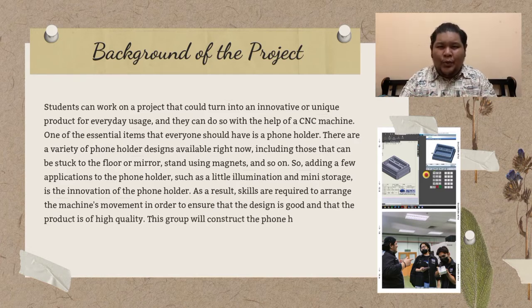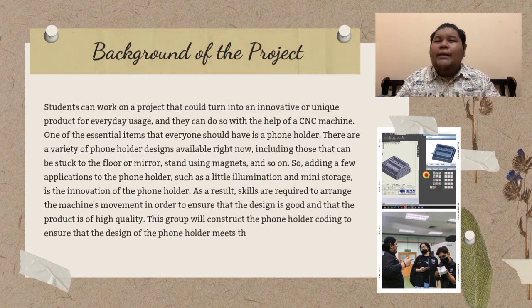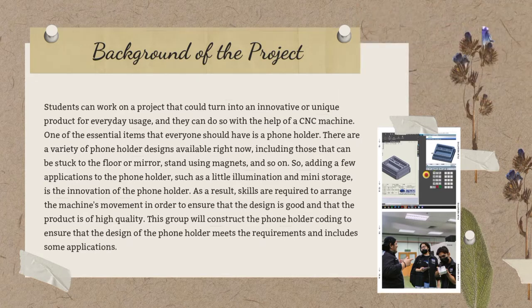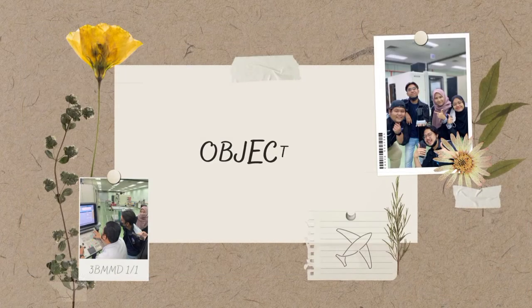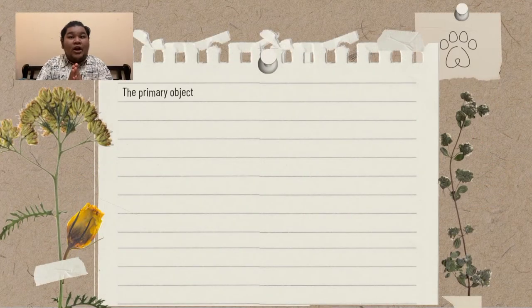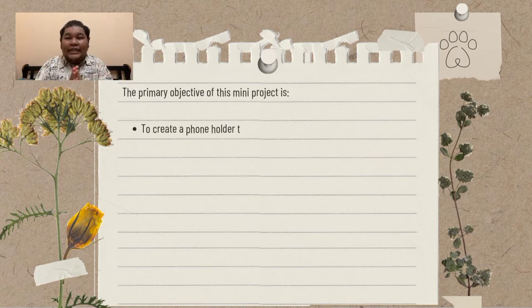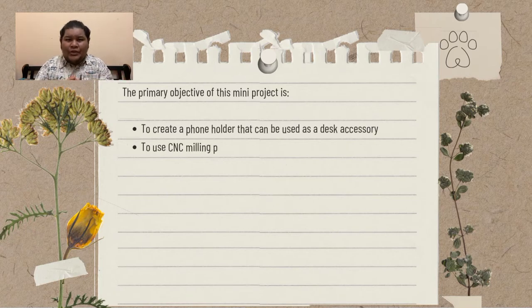This group will construct the phone holder to ensure that the design meets the requirement and includes some applications. The primary objectives of this mini project are: first, to create a phone holder that can be used as a desk accessory; second, to use CNC milling programming to emulate the coding of our phone holder project.